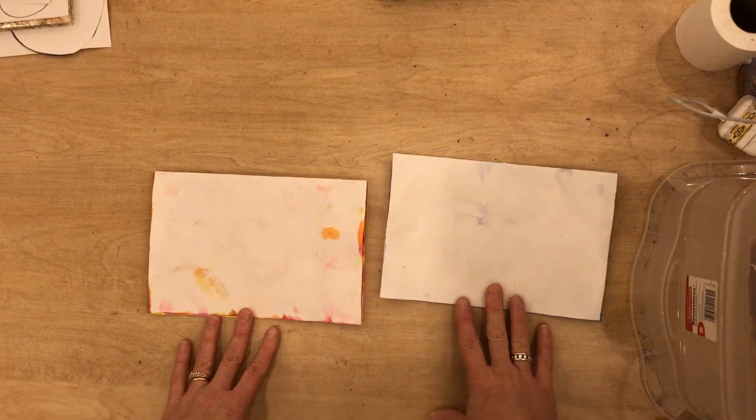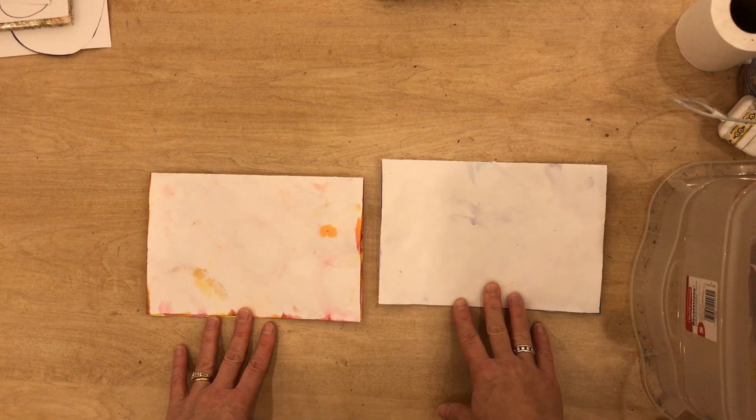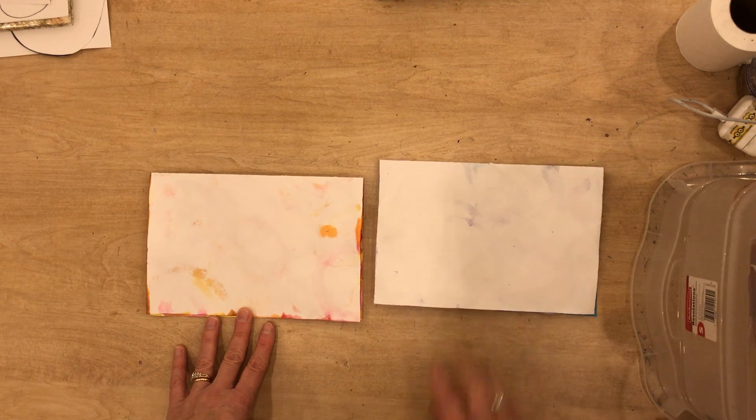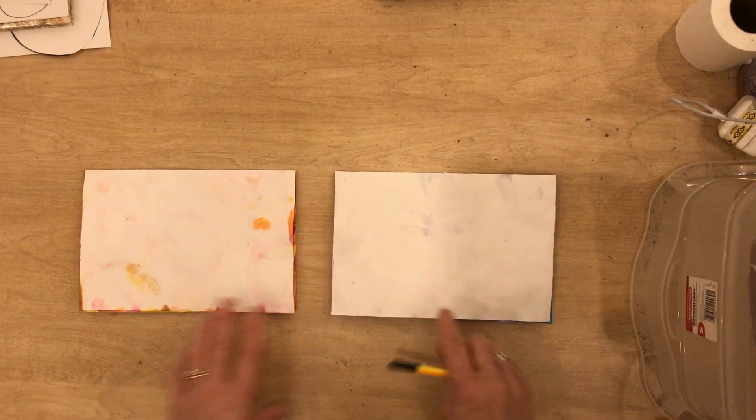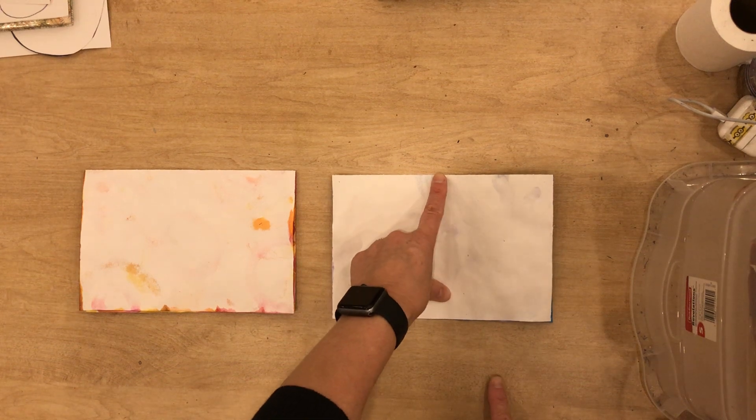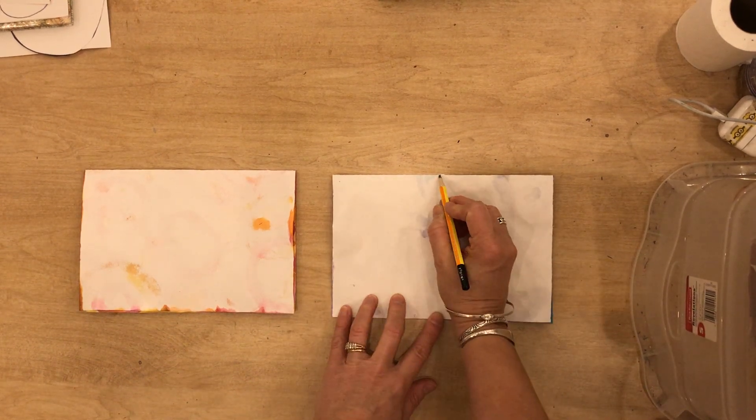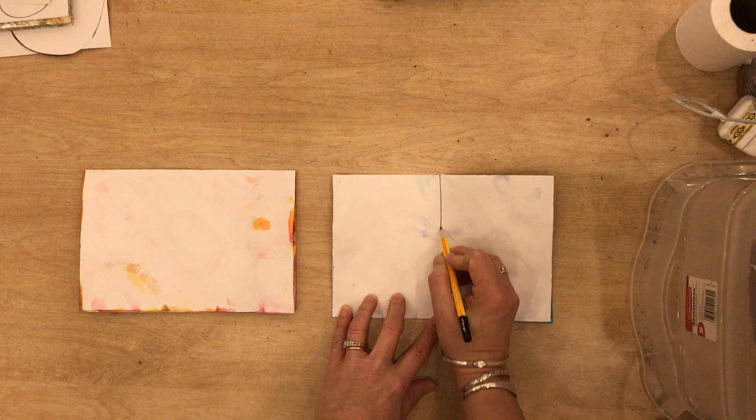Once you have these two done, we are going to do the next step. So on this piece of paper, I'm going to find the middle and I'm going to draw a line straight down.